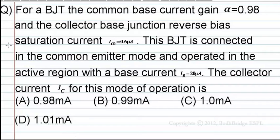For a BJT, the common base current gain α equals 0.98 and the collector base junction reverse bias saturation current ICO equals 0.6 microamperes. This BJT is connected in the common emitter mode and is operated in the active region with a base current IB equal to 20 microamperes. The collector current IC for this mode of operation is: the options are 0.98mA, 0.99mA, 1.0mA, or 1.01mA.